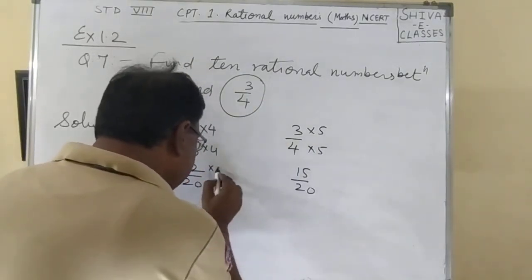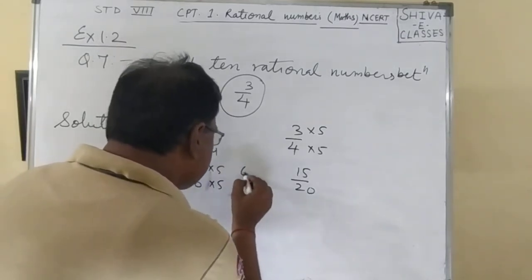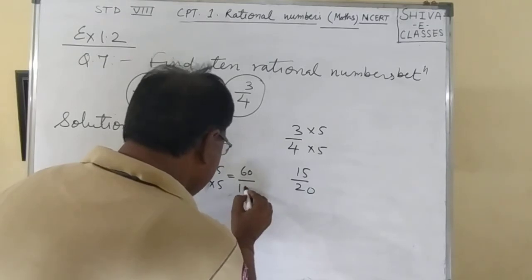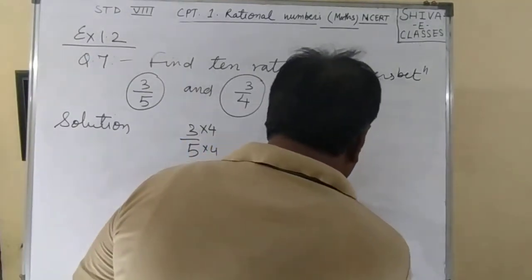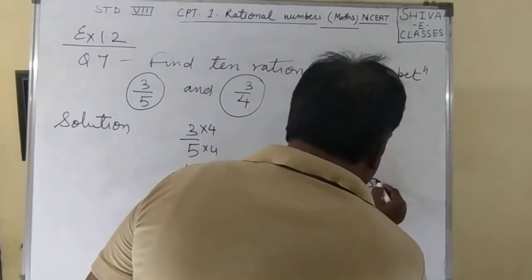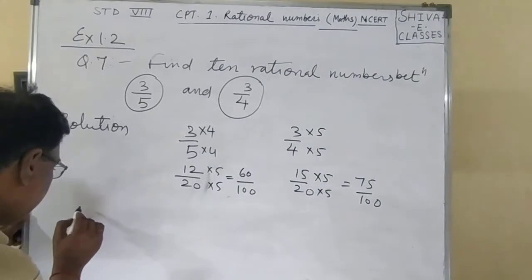Multiply 5 into 5. So 12 by 20 becomes 60 by 100, and 15 by 20 becomes 75 by 100.